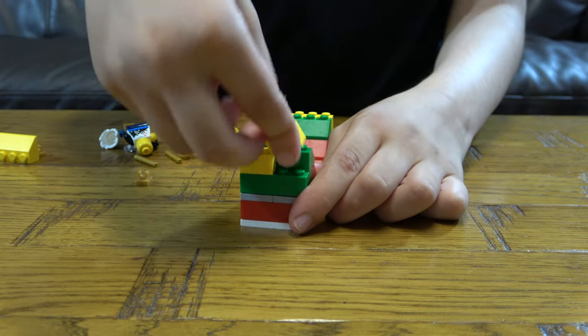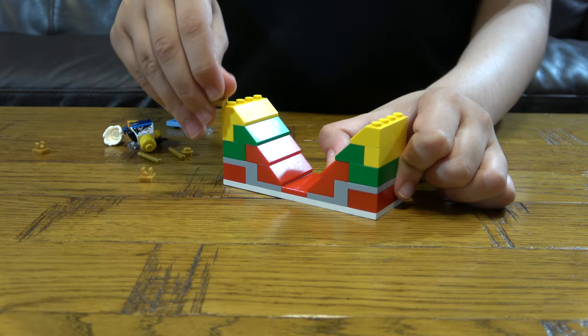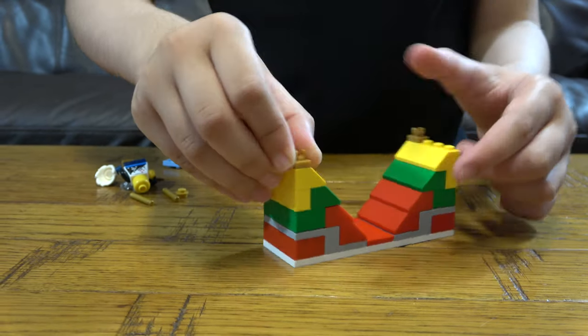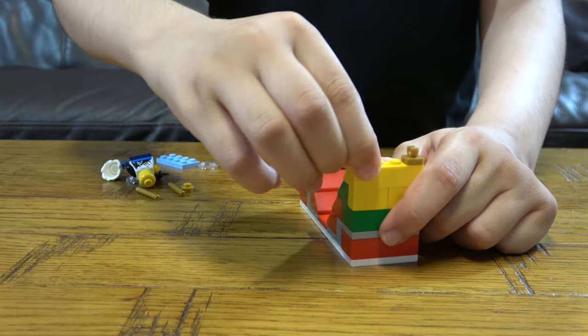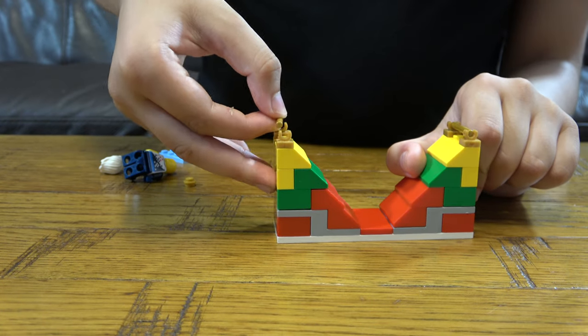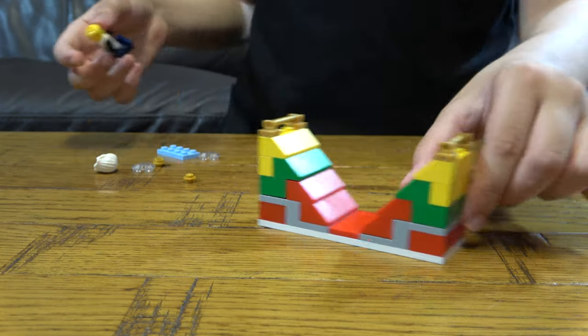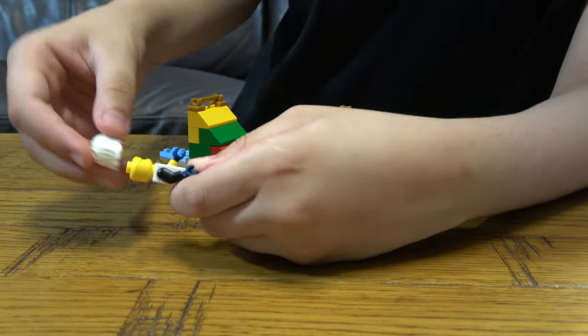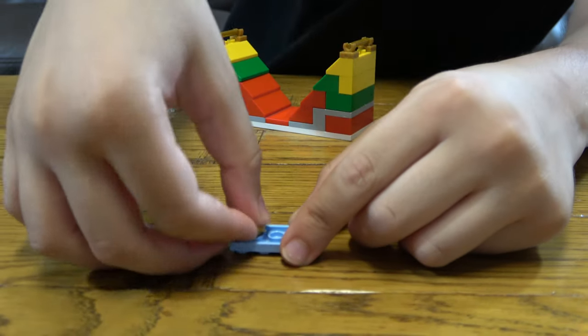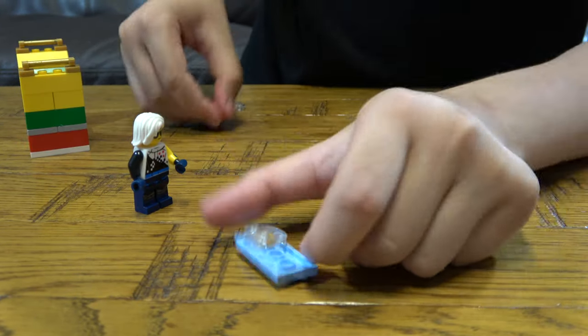Like this. And then next we're gonna build the hoverboard. You're gonna get any minifigure that you have. I'm gonna put this here, I'm gonna place this here, and I put this underneath like for the hoverboard.